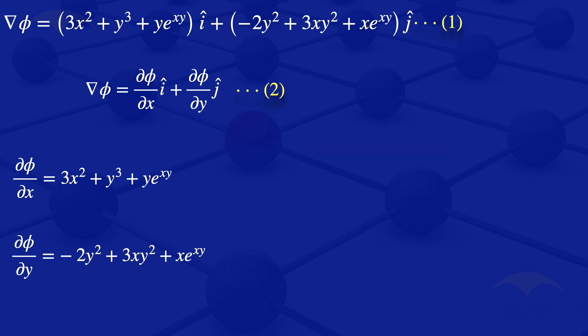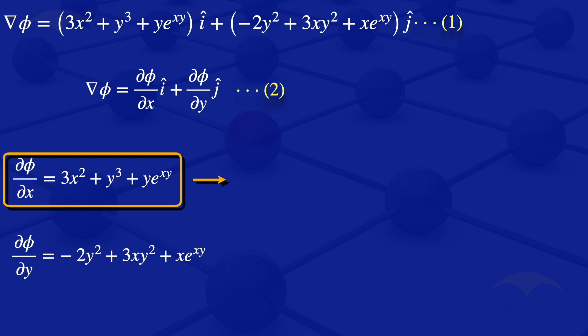We now have those two equations. Looking at equation 1, we integrate it with respect to x to get φ. So φ(x, y) equals x³ + xy³ + e^(xy) plus a constant of integration g₁(y). We call it g₁(y) — a function of y — because we had a partial derivative with respect to x, so the constant of integration is in terms of y.